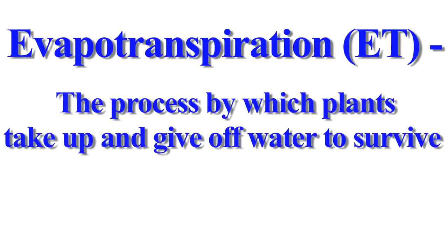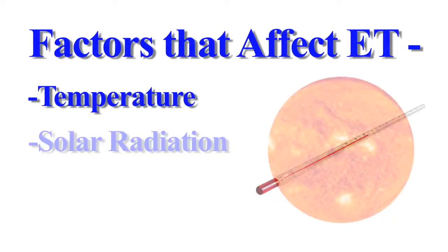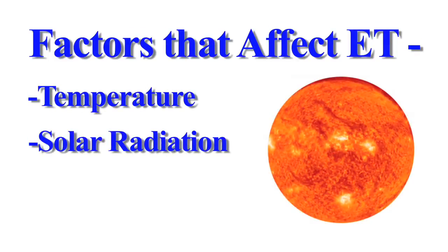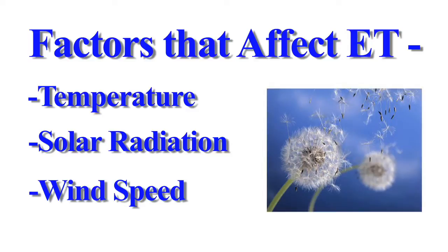Evapotranspiration, or ET, is the process by which plants take up and give off water to survive. Factors such as temperature, solar radiation or intensity of the sun, and wind speed affect the rate at which ET occurs.